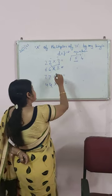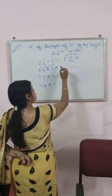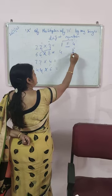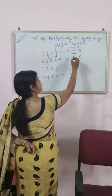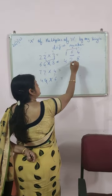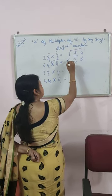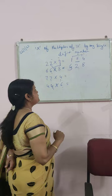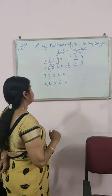Next, 8 sixes are 48. Add both the digits, we get 12. 2 is here and 1 is carried over here. So, the answer is 528.